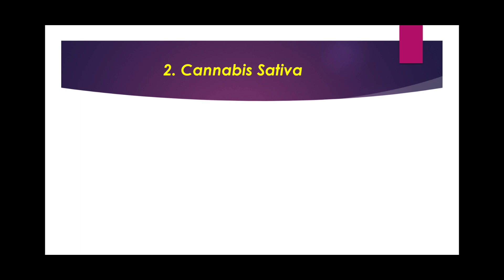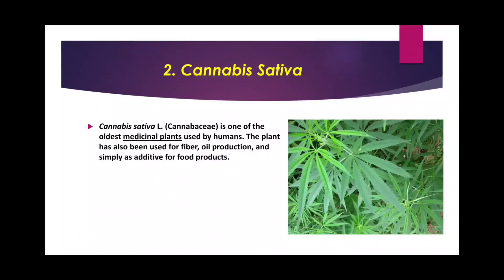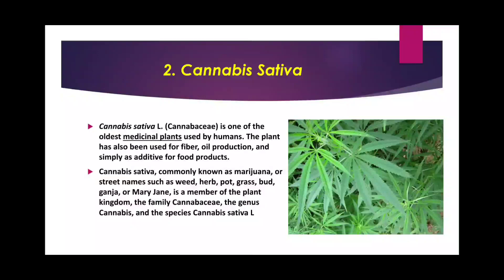The second most common drug abused all over the world is Cannabis sativa. This is one of the oldest medicinal plants used by humans, used for fiber, oil production, and as an additive for food products. Cannabis sativa is commonly known as marijuana, or by street names such as weed, herb, pot, grass, bud, ganja, or Mary Jane. It belongs to the family Cannabaceae, genus Cannabis, species Cannabis sativa L.